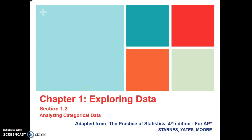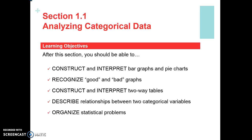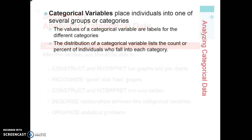In section 1.2, we're going to look at analyzing categorical data before we take a look at quantitative data. In this section, you're going to look at bar graphs and pie charts, understand the difference between good and bad graphs, be able to construct and interpret a two-way table, understand the relationship between two categorical variables, and get a brief introduction on how to organize statistical problems.